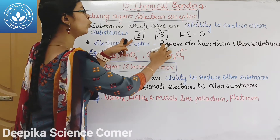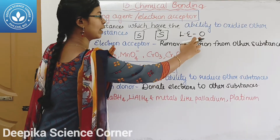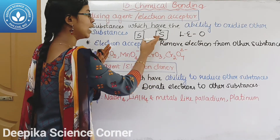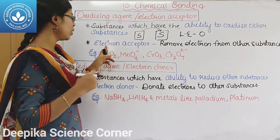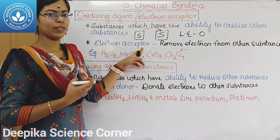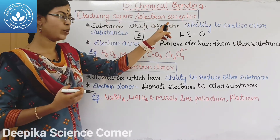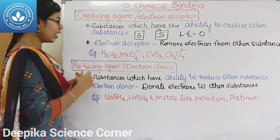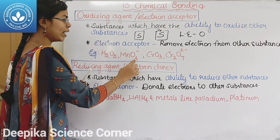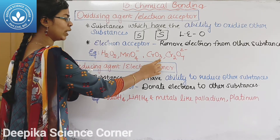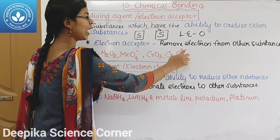The oxidizing agent removes electrons from other substances — it is an electron acceptor. Examples of oxidizing agents include H2O2 (hydrogen peroxide), MnO4− (permanganate), CrO3 (chromium trioxide), and Cr2O7²− (dichromate ion).